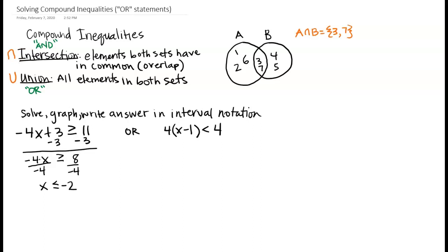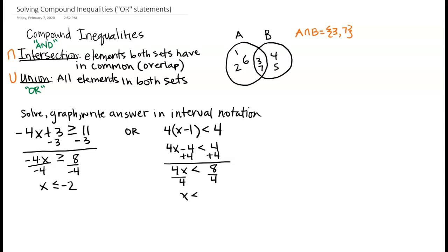Now solving the second inequality: distributing gives 4x minus 4 is less than 4. Adding 4 to both sides gives 4x is less than 8, and dividing by 4 gives x is less than 2.